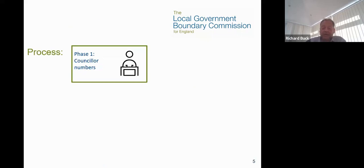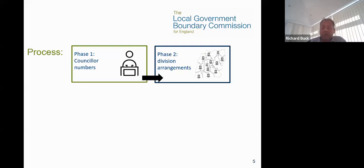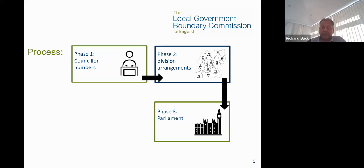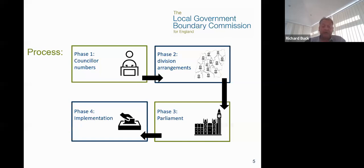The process is split into four distinct phases. Phase one, which has now been completed, is primarily concerned with councillor numbers. Based on the evidence received, the Commission has decided that Essex should have 77 councillors going forward — two more than it currently has. We've now moved into phase two: the division arrangements themselves — those boundaries — during which we consult with the local community and draw up new division boundaries. After proposing final recommendations we go through a parliamentary process to make the new arrangements law, and then implementation at the county elections in 2025.